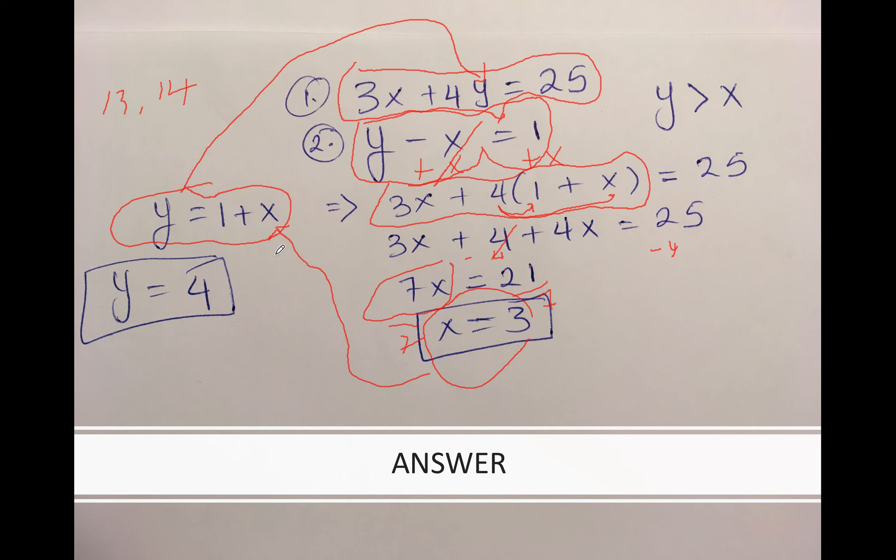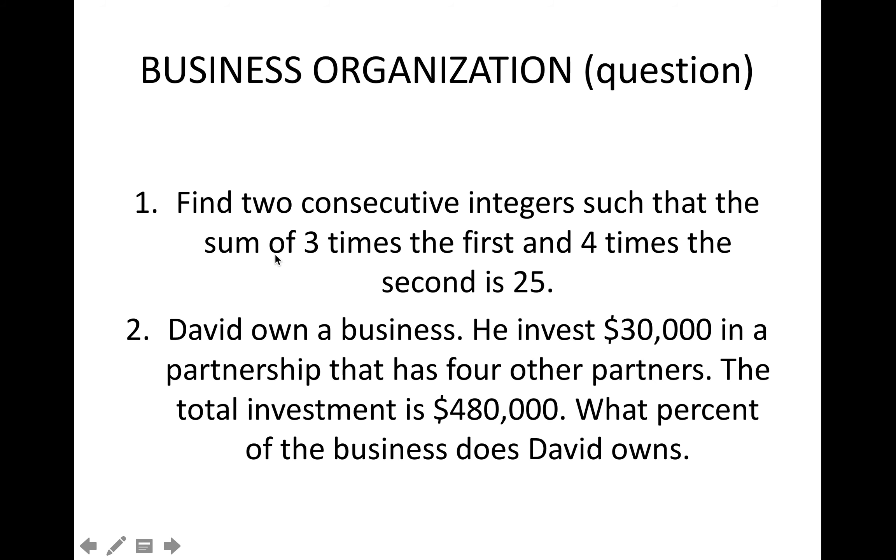The second one: David owns a business. He invests $30,000 in a partnership that has four other partners. The total investment is $480,000. What percent of the business does David own?